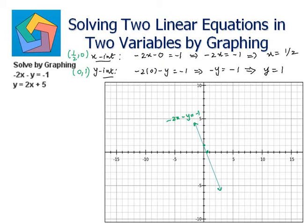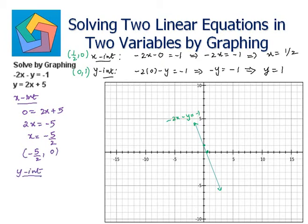Let's take the intercepts of the other line: y is equal to 2x plus 5. For the x-intercept, put y as 0: 0 equals 2x plus 5, so 2x equals negative 5, giving x equals negative 5/2. So (−5/2, 0) is the x-intercept. For the y-intercept, put x as 0: y equals 2 times 0 plus 5, so y equals 5. So (0, 5) is the y-intercept. Plotting (−5/2, 0) and (0, 5).